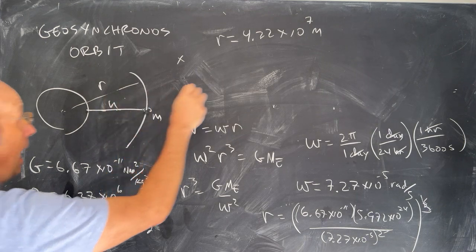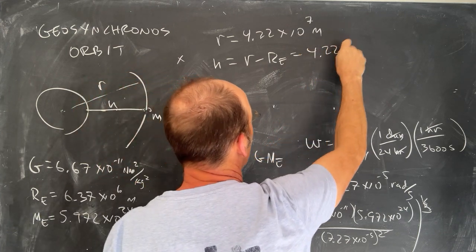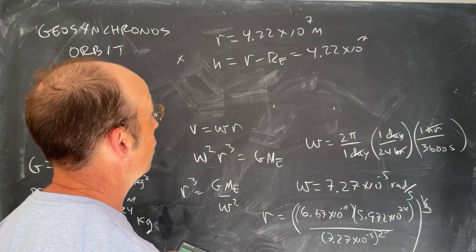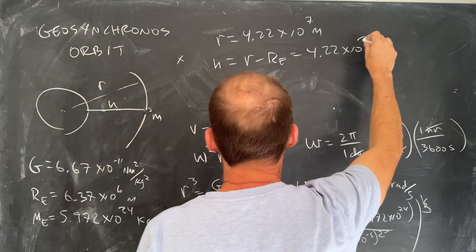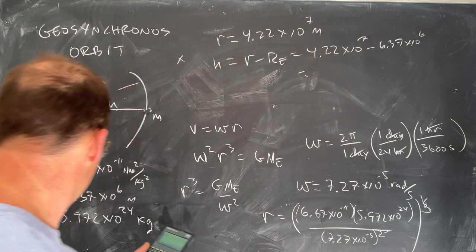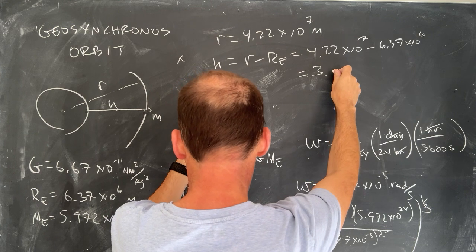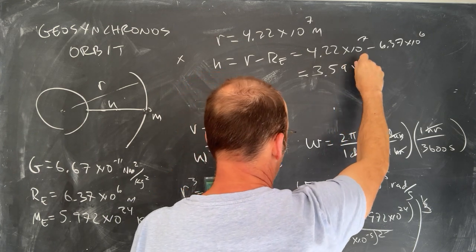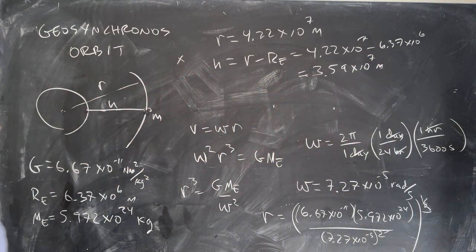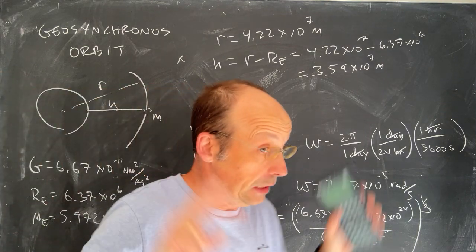Now, I want to calculate this value of h, the altitude. h is just going to be equal to r minus the radius of the earth. So, that's going to be 4.22 times 10 to the 7th. Notice that that is larger than the radius of the earth, so that's good. But that's that. So, 4.22 times 10 to the 7th minus the radius of the earth, 6.37 times 10 to the 6th. And I get 3.59 times 10 to the 7 meters. There you go. That's your orbital altitude, how far above the surface of the earth you need for these geosynchronous orbits. It is far away. Okay, they are far away.